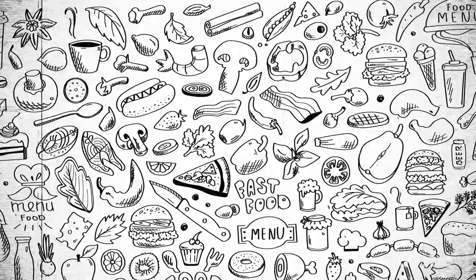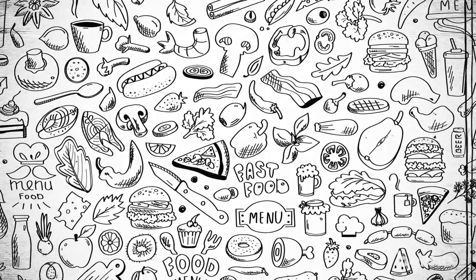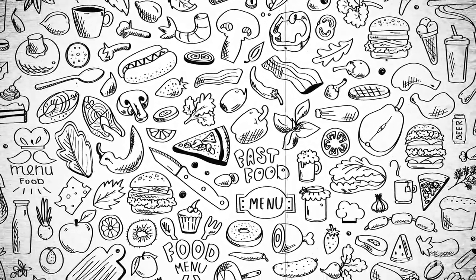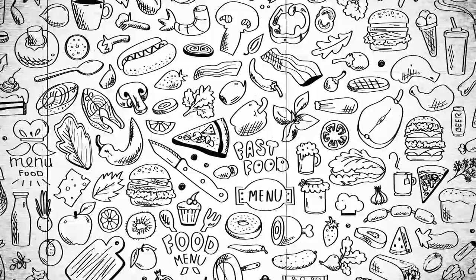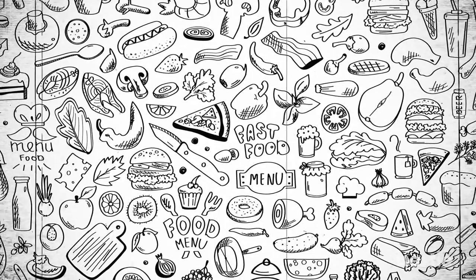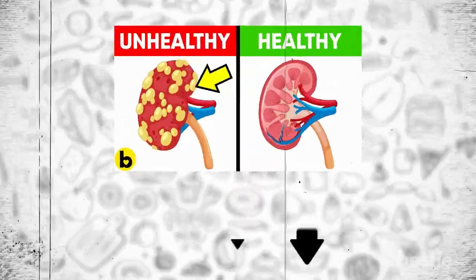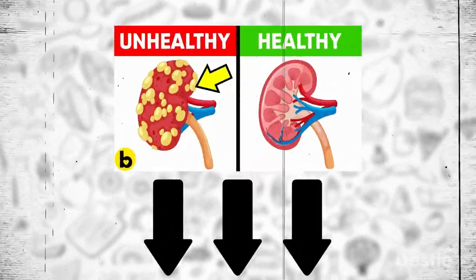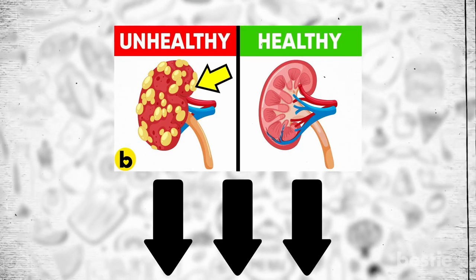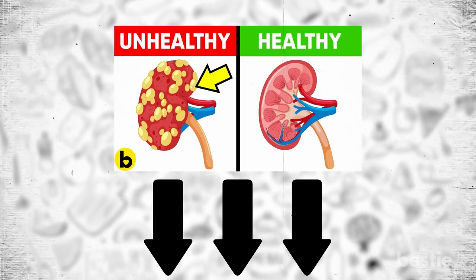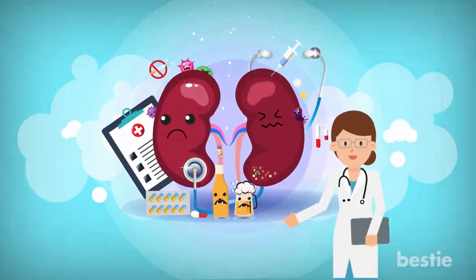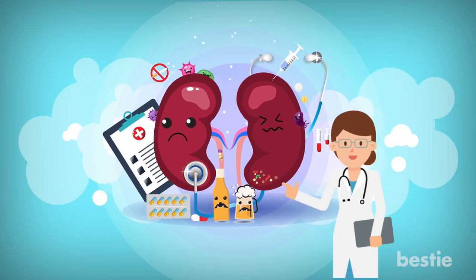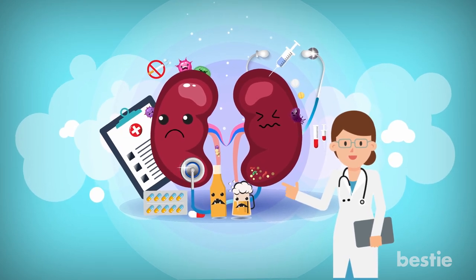Looking at the types and their composition makes it clear that food can impact our kidney health significantly. Want some healthy options? To learn about 13 foods that make your kidneys healthy, watch our video linked below. Now that we know the types of kidney stones, let's have a look at the risk factors involved.